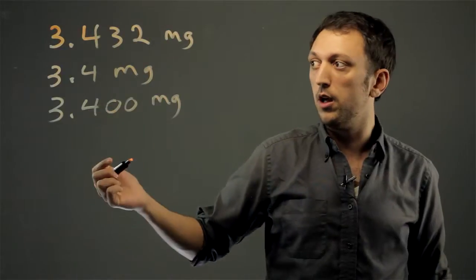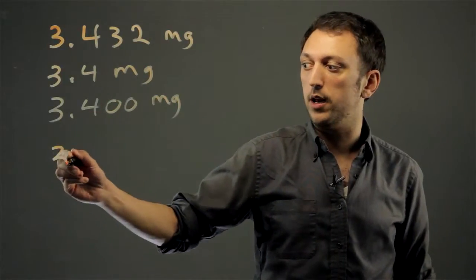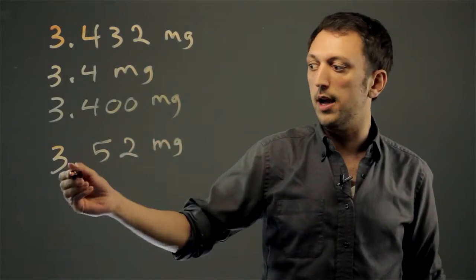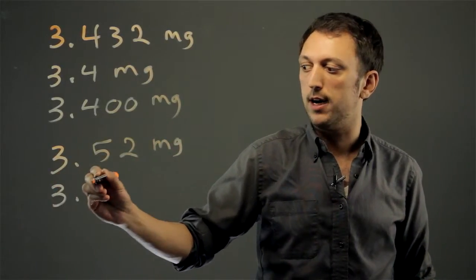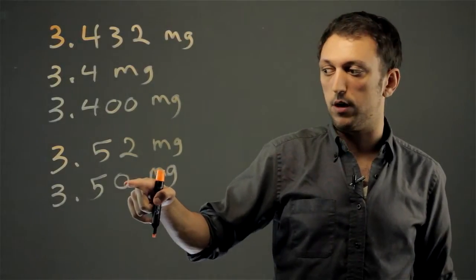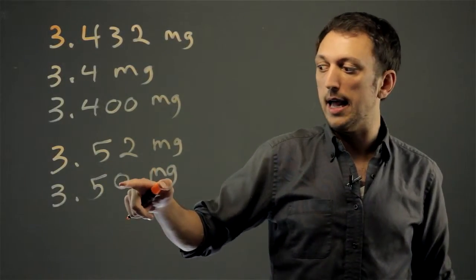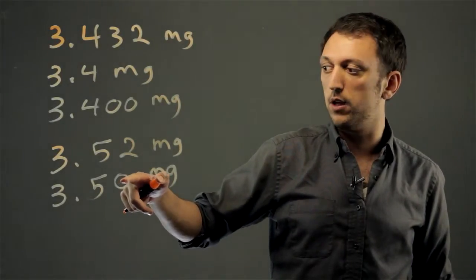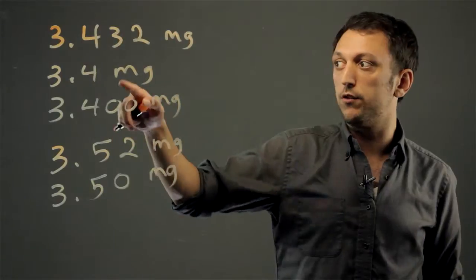one decimal. So, if I took a measurement and it weighed 3.52 milligrams, and I expressed it as 3.50 milligrams, there's only one trailing zero in a significant digit, and it is the zero here in the hundredths place to replace the two. So,